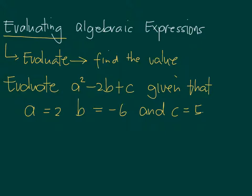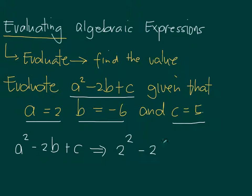We want to find the value of this when a is 2, b is negative 6, and c is 5. All we have to do is replace the letters a, b, and c with the given values. That means 2 squared minus 2 times negative 6, and c is 5, so plus 5.